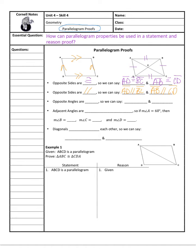We also know that opposite angles are congruent. So if I look at my opposite angles, that would mean angle A would have to be congruent to angle C, and likewise angle B would have to be congruent to angle D, because they're opposites.